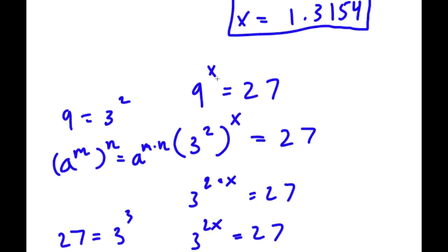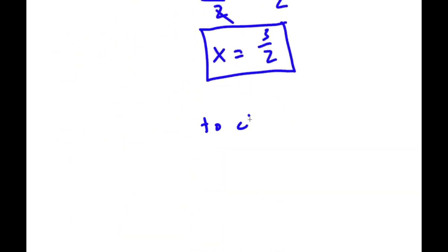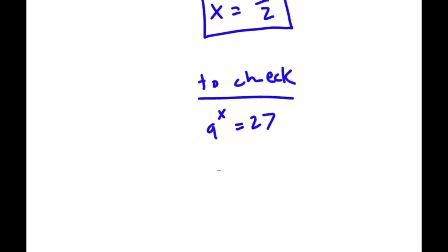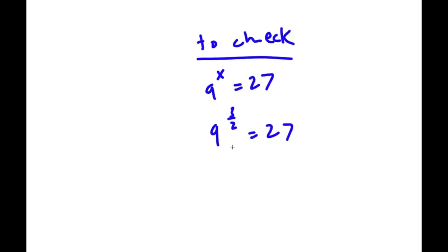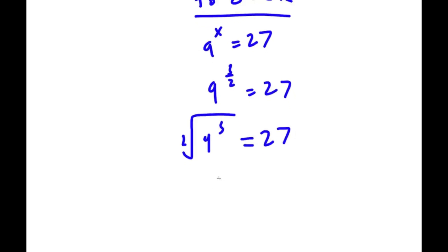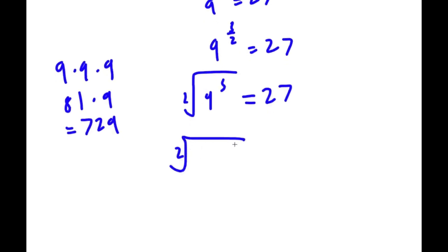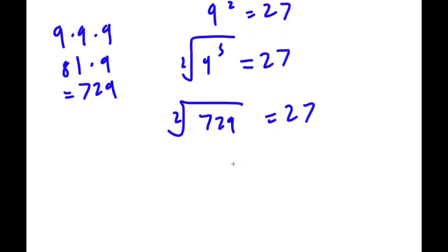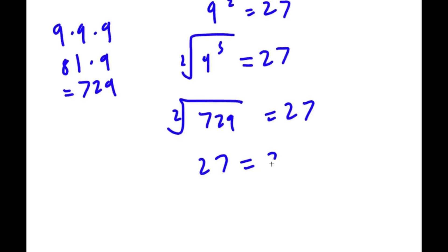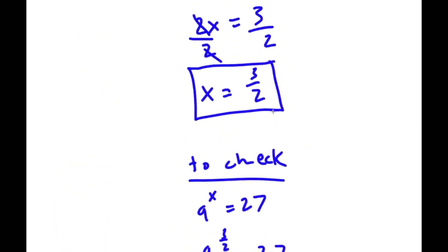I can go ahead and plug this in for x to check. We have 9 to the power of 3 over 2 is equal to 27. I can rewrite this as the square root of 9 to the power of 3 equals 27. Now 9 to the power of 3 is 9 times 9 times 9: 9 times 9 is 81, and 81 times 9 is 729. So the square root of 729 is 27, and since 27 equals 27, our solution is correct.